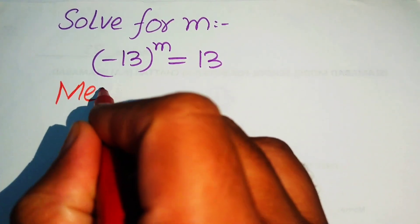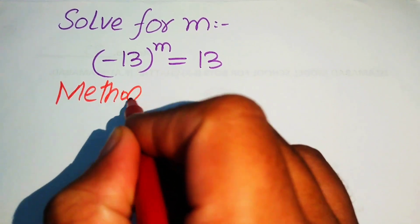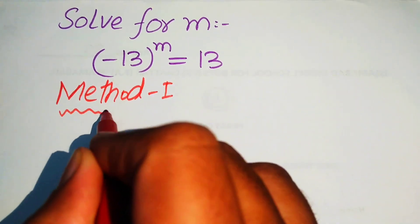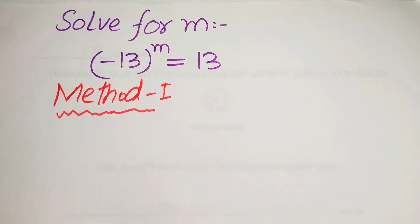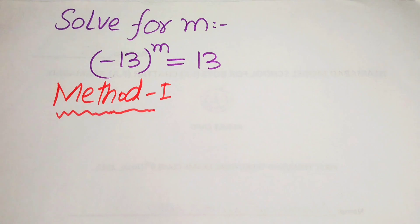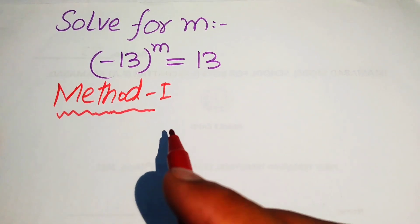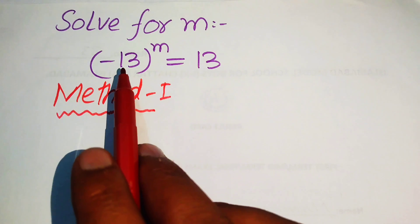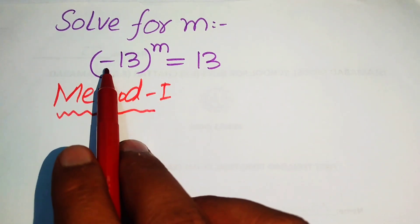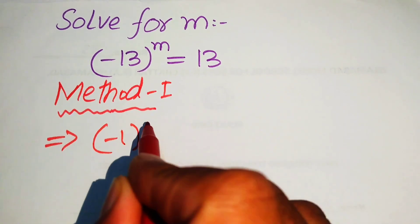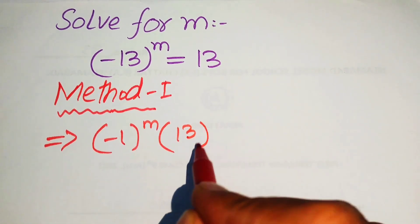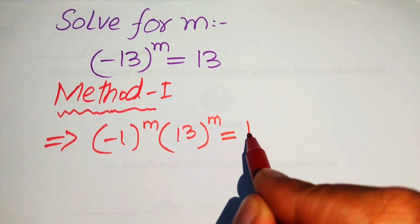In the first method, we use the common logarithm along with Euler's identity to find the value of m. First, we break the base by separating the negative and positive terms, writing it as (-1)^m times 13^m equals 13.